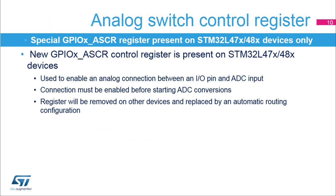The new GPIOX ASCR control register has been introduced on STM32L47x/48x devices to control the analog interconnection between an I/O pin and ADC input. This register must be configured before ADC conversions are started to correctly bring the signal to the ADC input. This register is removed on other categories of STM32L4 devices, and the analog interconnection will be enabled automatically when an ADC channel is selected.